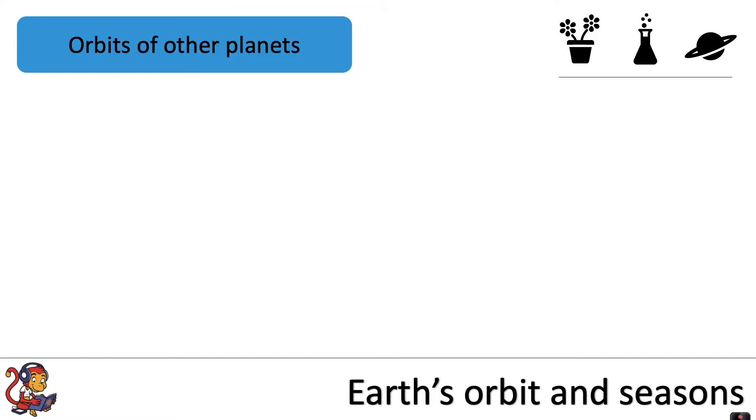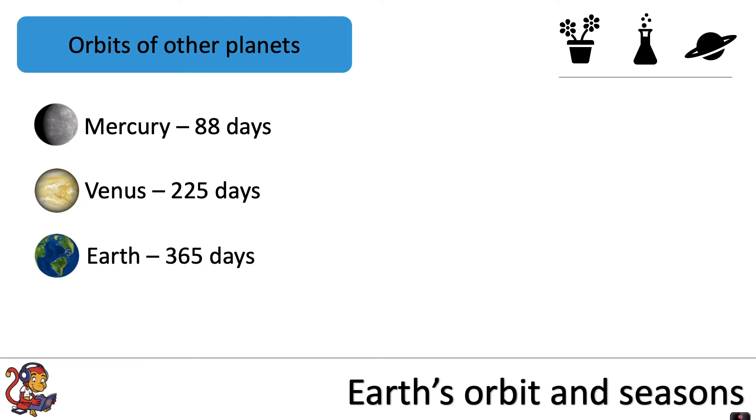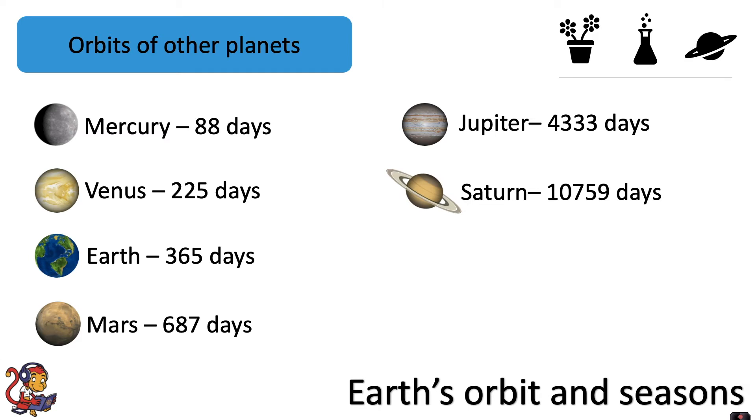Other planets in our solar system have orbits of a different duration. Mercury's is 88 days, Venus 225, Earth as we said 365, Mars 687, Jupiter 4333, Saturn 10759, Uranus 30687, Neptune 60198.